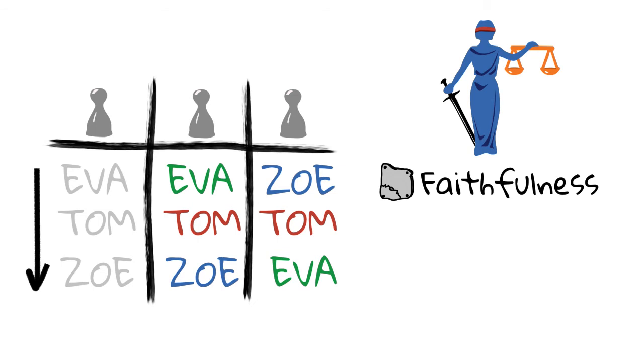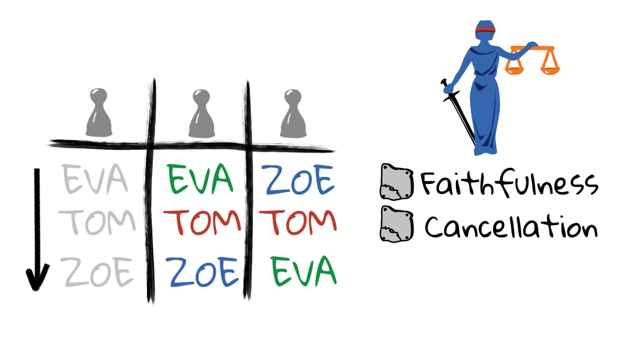Now consider voters two and three. The preferences of these two are exactly reversed. There is a perfect tie between all candidates. The cancellation axiom tells us that all three of them should win.